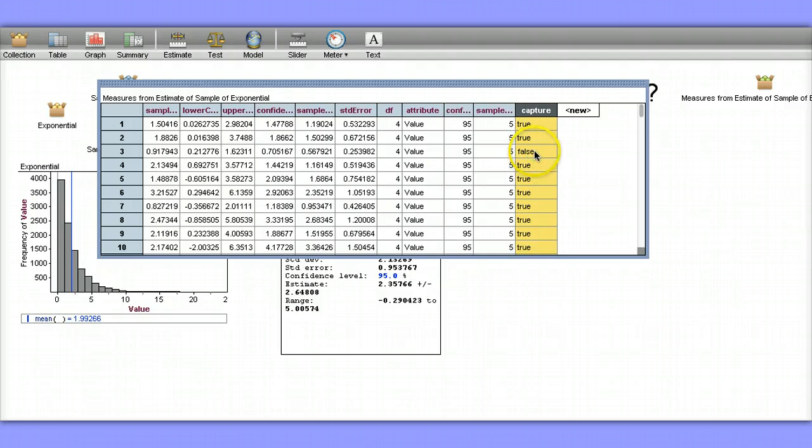Let's take a look at this false one here since that seems to be a little different. Is this interval over here, 0.21 to 1.62, does this interval contain the true value of the population mean, which was 1.99? No, it doesn't, so that makes sense that that says false.